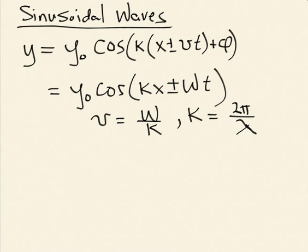The quantity omega over k is generally called a phase velocity, because it tells you the velocity at which the phase moves. And remember, the argument of a sinusoidal function we call the phase. This whole thing is the phase of the argument. So this is the phase velocity,